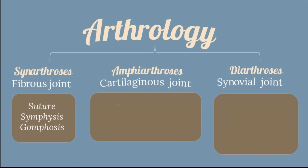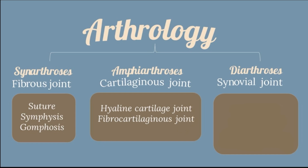Amphiarthrosis, or the cartilaginous joint, is the articulation united by fibrocartilage and hyaline cartilage, or both, and can be slightly movable or immovable. Diarthrosis, or the synovial joint, is an articulation united by a synovial joint capsule. These are freely movable.